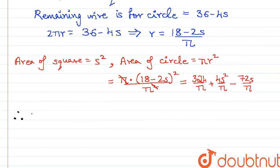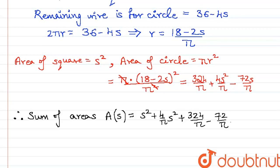The sum of the areas which we will call as A thus becomes a function of the side of the square: s² plus 4s²/π plus 324/π minus 72s/π. That will be s² times (1 plus 4/π) minus s times 72/π plus 324/π.